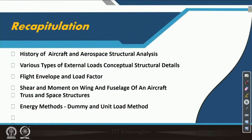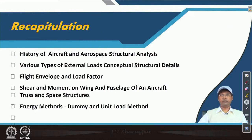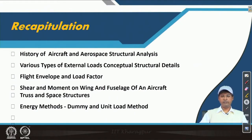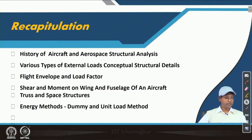Before we start, as usual we are supposed to recapitulate. In this recapitulation we have done: history of aircraft and aerospace structural analysis, various types of external loads, conceptual structural details, flight envelope and load factor, shear and moment on wing and fuselage, plane truss and space truss, and in the last three lectures we covered dummy load method and unit load method with many examples. In this lecture we will try to understand and solve using Castigliano's theorem.